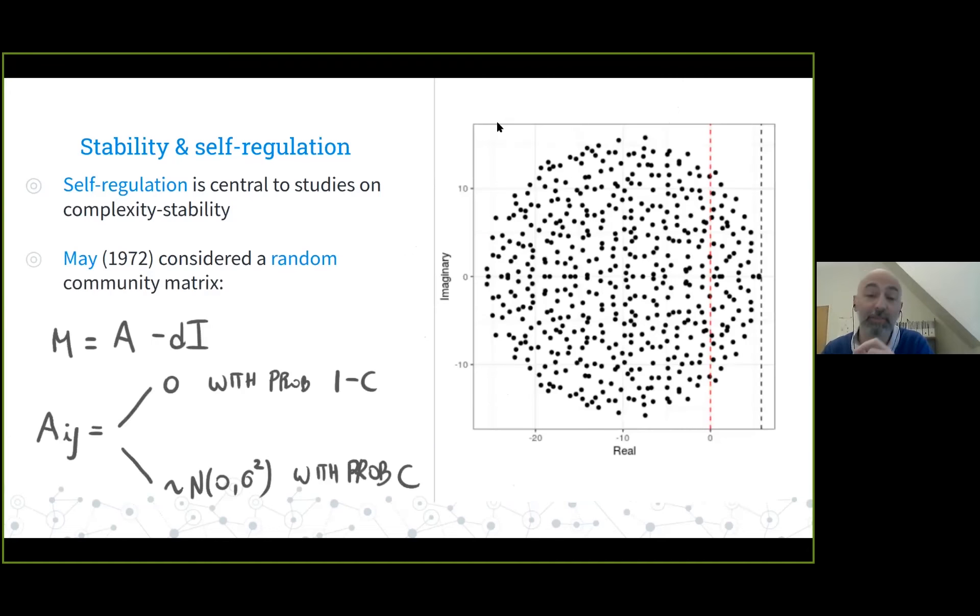With this in mind, we can look at the contribution of Robert May in 1972, who studied what happens to very large random ecological communities. He said this matrix M is fundamental to understand the interactions between species around the equilibrium point. What happens if we draw a random matrix M? We say it's the sum of two matrices: A, a matrix of interaction, minus D times the identity matrix, which represents self-regulation. We build A as a random matrix: two species do not interact with probability one minus C, where C is the connectance. If they do not interact, we put a zero in element ij. If they do interact, we sample a random interaction from a normal distribution with mean zero and variance sigma squared, with probability C.